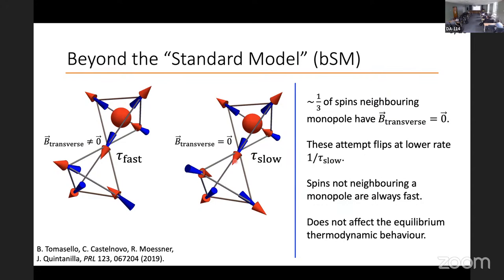The key thing here is the realization, which was outlined in this paper, that for spins that are neighboring a monopole, there are actually some of them, approximately one third, that will have a transverse field that is much smaller. If you have this transverse field from the nearest neighbors cancelling, as you can probably convince yourself is the case here on the right, you will end up with a much smaller tunneling element and the rate at which these spins flip will be much smaller. You have a much longer timescale for these flip attempts, which we call tau slow. Whereas in the case here on the left, the transverse field from these dominant nearest neighbors is actually not zero. And you then end up with a faster timescale for these flips.